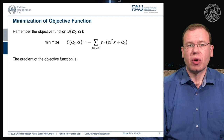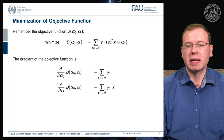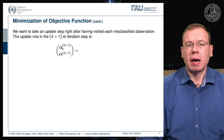Looking at the objective function we seek to minimize, computing the gradient with respect to α₀ gives minus the sum of all yᵢ in the misclassified set, and the partial derivative with respect to α gives minus the sum of yᵢ times xᵢ.